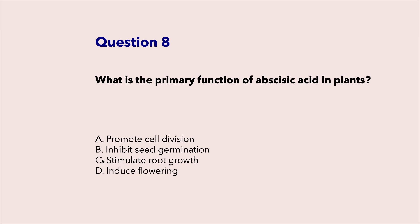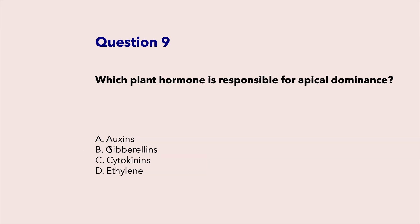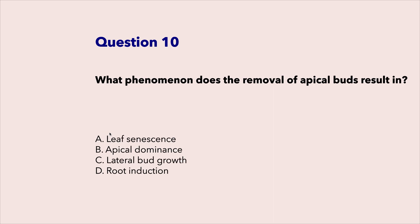What is the primary function of abscisic acid in plants? Inhibit seed germination. Which plant hormone is responsible for apical dominance? Auxins. What phenomenon does the removal of apical buds result in? Lateral bud growth.